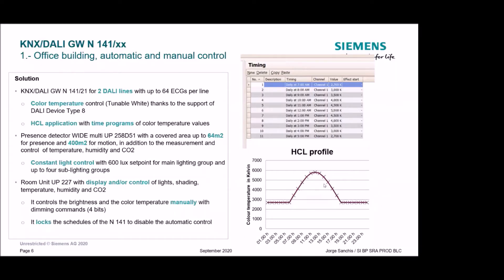Of course, you can also control the color temperature of the ballast manually with the KNX-DALI gateway using a room unit or KNX visualization. You may need to lock the schedulers or constant light control in order to have complete manual control — this depends on the use case. So this is the first use case: automatic and manual control of light with human-centered lighting, using color temperature via time programs and the presence detector controlling brightness for 600 lux.